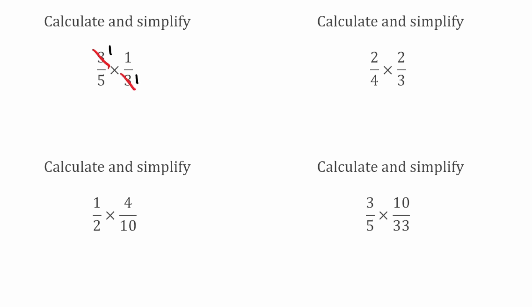Now that we've simplified across the fractions, all we need to do is multiply through. On the numerator I've got 1 times 1, which is 1, and on the bottom I've got 5 multiplied by 1, which is 5. So 3 fifths multiplied by 1 third is equal to 1 fifth.